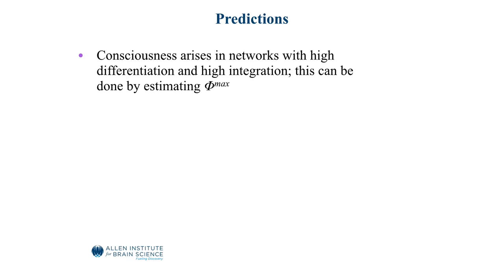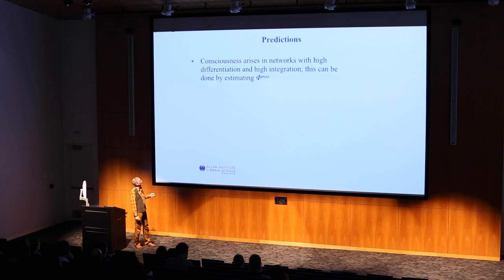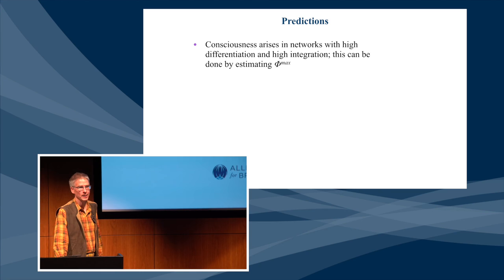Differentiated, because every possible experience I can have is one out of an almost infinite number of different experiences — just think about all possible scenes of every possible movie you've seen or will ever see. Each one is a discrete conscious experience. Yet each of those conscious experiences is also highly integrated — it's one, it's unique, it's unitary. If I see the audience here, I don't see the left audience and the right audience separately; I see everything as a whole. This theory provides a measure, phi, which is a measure of the degree to which the system is conscious, and it makes very specific predictions.